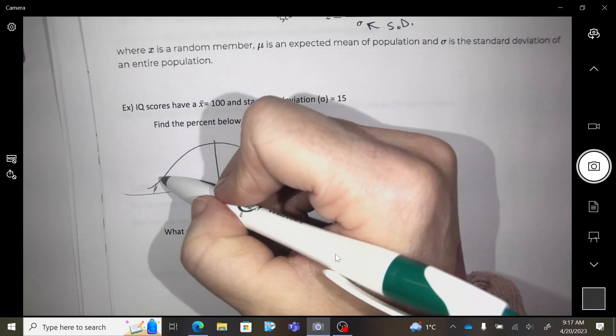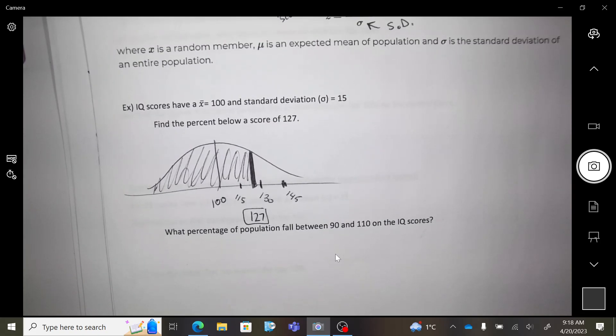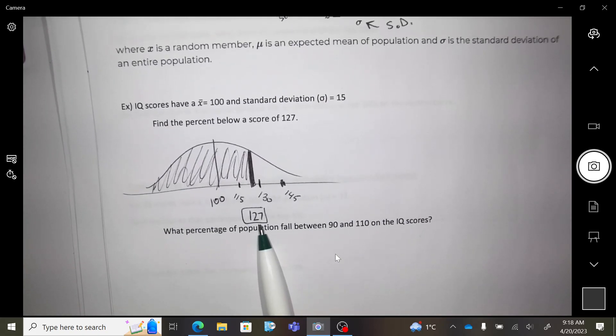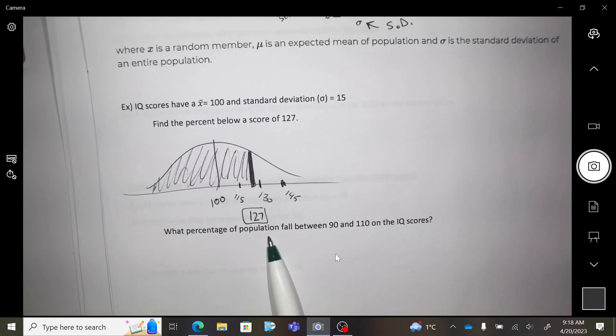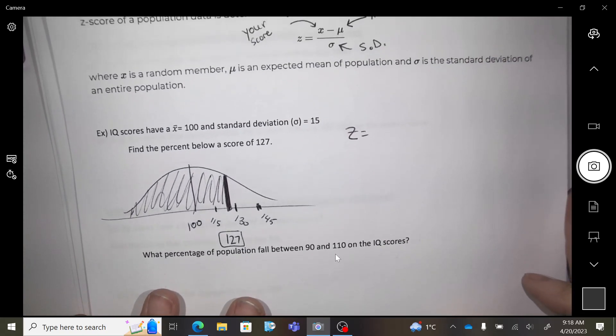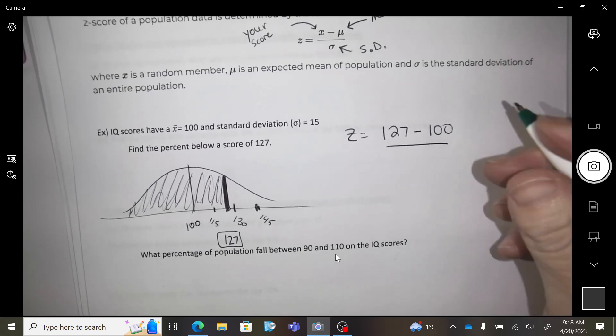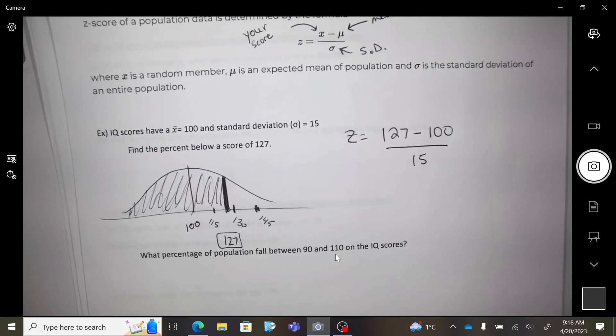Find the percent of people that are below me. We need to get the z-score here. Anybody have a prediction about what the z-score might be? An educated guess? Almost two, so like 1.8 or something like that, right? Okay, so let's go: z equals my score, so 127, subtract the mean over the standard deviation.